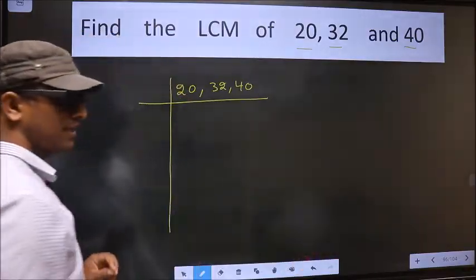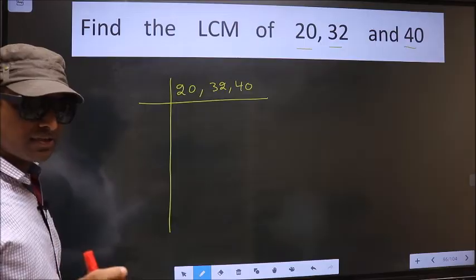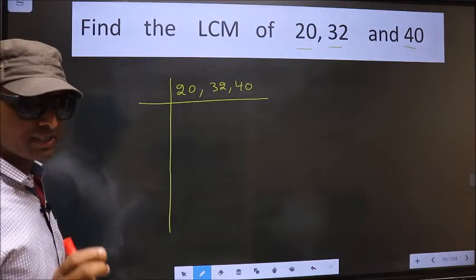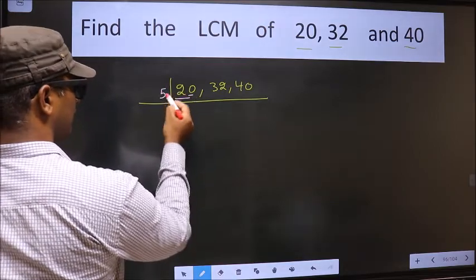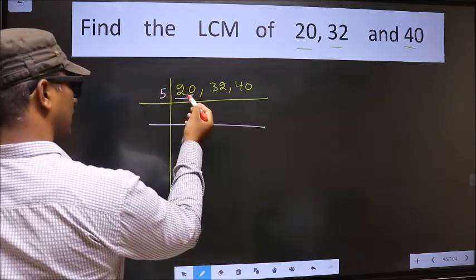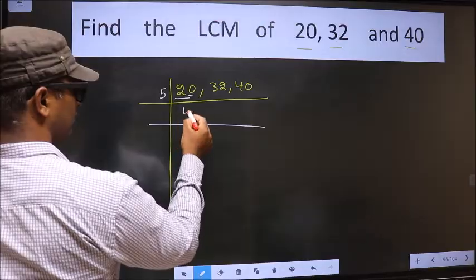Okay, next. Now, we should focus on the first number. That is 20, last digit 0, so we take 5 here. When do we get 20 in 5 table? 5, 4 is 20.